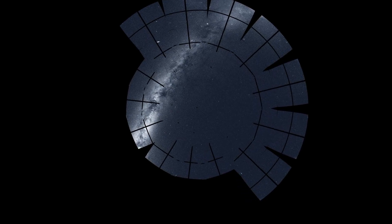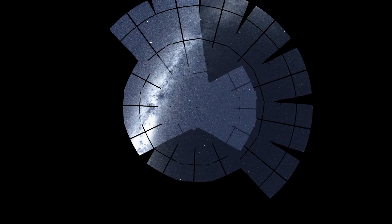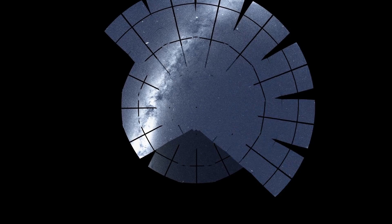To do this, TESS divided the northern sky into 13 sectors, and its four cameras monitored each sector for nearly a month.